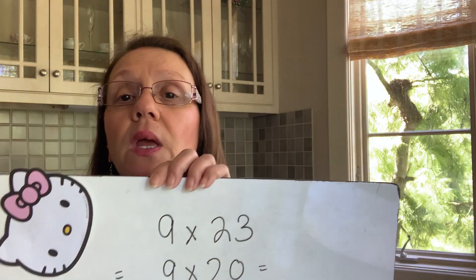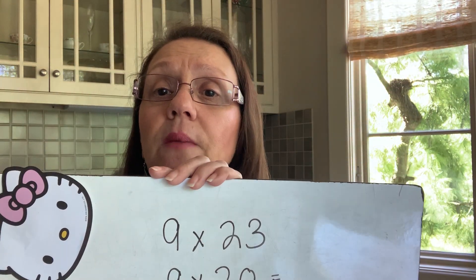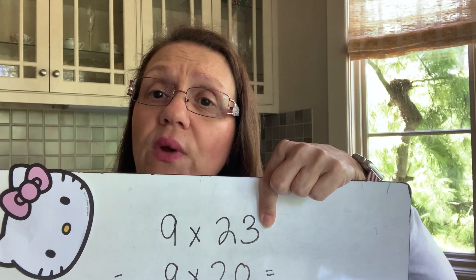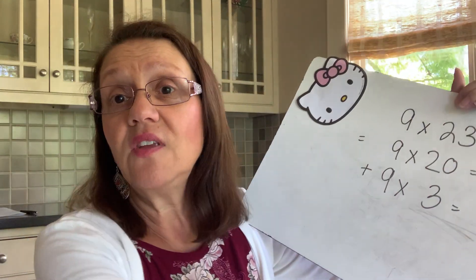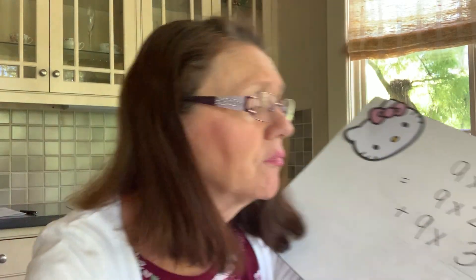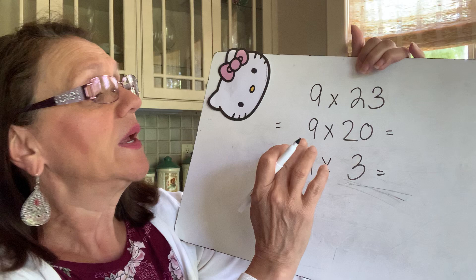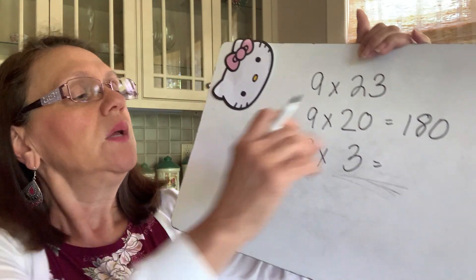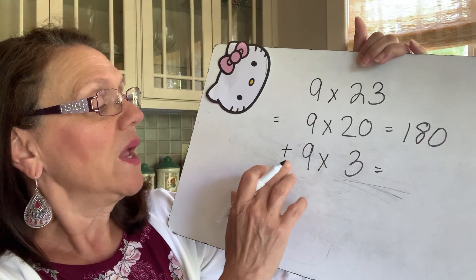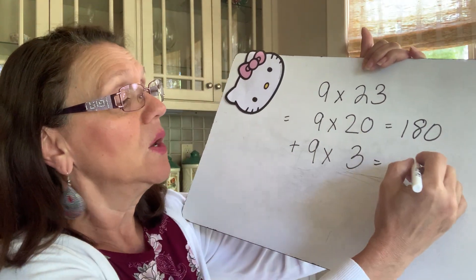Here's an example. If I have 9 times 23, I'm going to break up my larger factor, 23, into 20 plus 3. Using the tens trick, we can easily do 9 times 20 because 9 times 2 is 18, then annex your 0. Annex is a fancy word from the My Math book — it means stick a 0 in there. So we stick a 0 in there, and then we have our times table question of 9 times 3, which is 27.